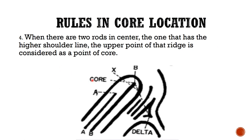Rule number four: when there are two rods in the center, the rod that has the higher shoulder line — the upper point of that ridge — is considered the point of the core. The core is located at the end of the ridge with the higher shoulder. That is the fourth rule in core location.